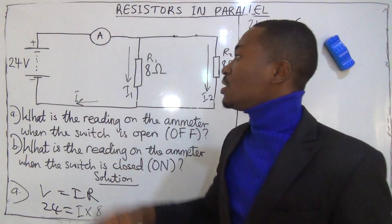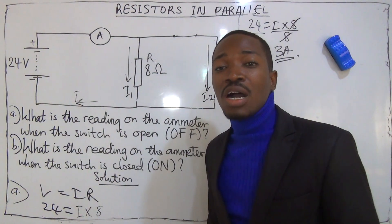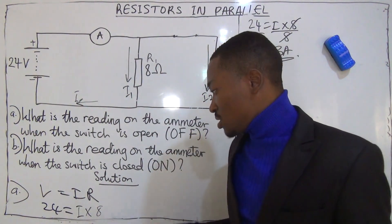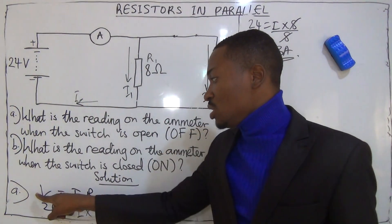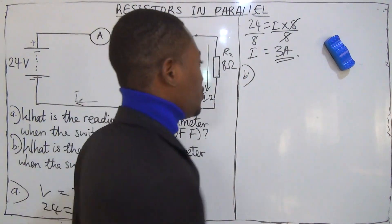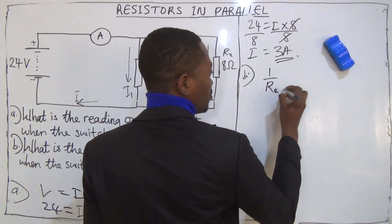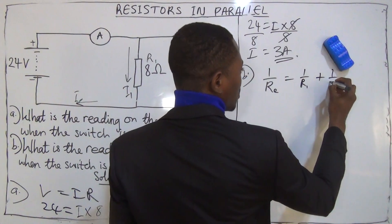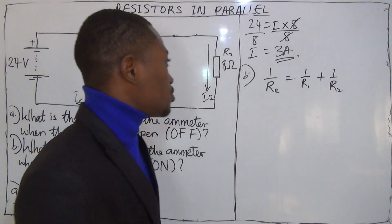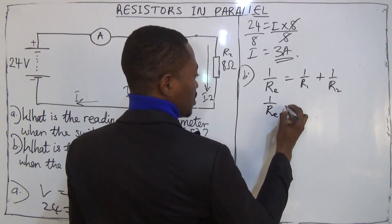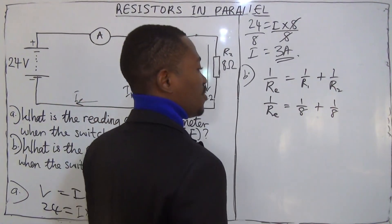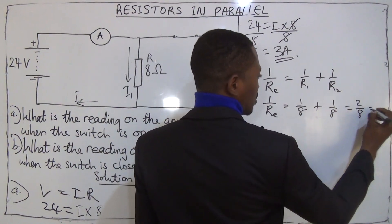To get the total current flowing in the circuit, we have to calculate the effective resistance. We use the formula: 1 over R-effective equals 1 over R1 plus 1 over R2. R1 is 8 ohms and R2 is also 8 ohms. So: 1 over 8 plus 1 over 8 equals 2 over 8, which equals 1 over 4.